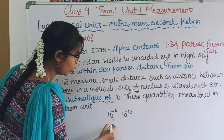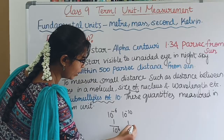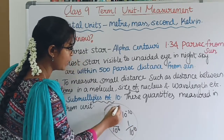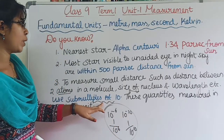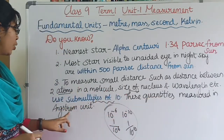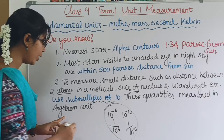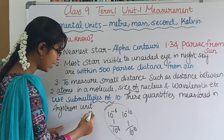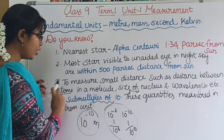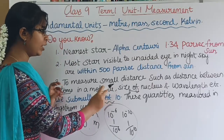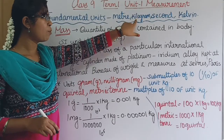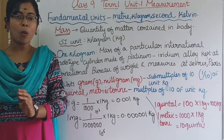So, 1 by 10 power 6 and 1 by 10 power 10 — these are submultiples of 10. These quantities — such as atomic and molecular sizes — are measured in angstrom unit. Angstrom unit is 10 power minus 10 meters. Now we have to use smaller units. We also need to discuss mass.